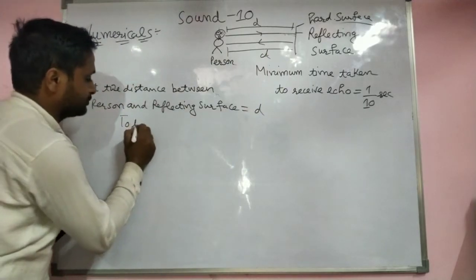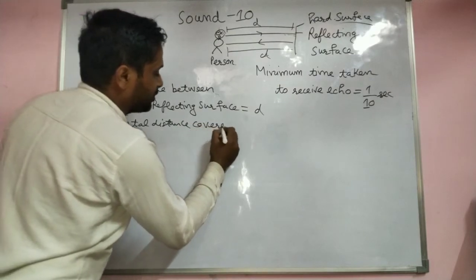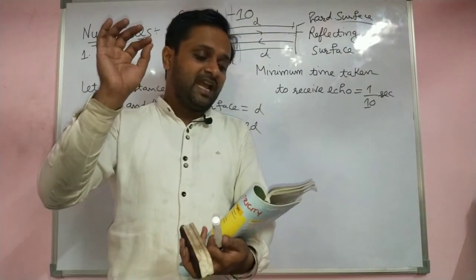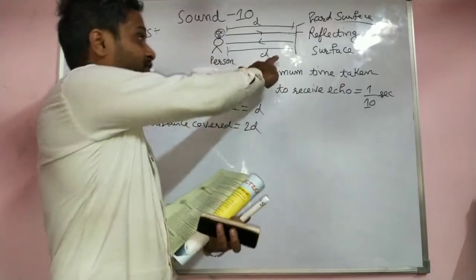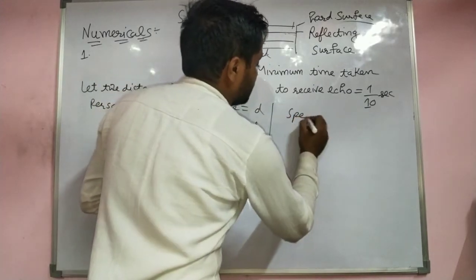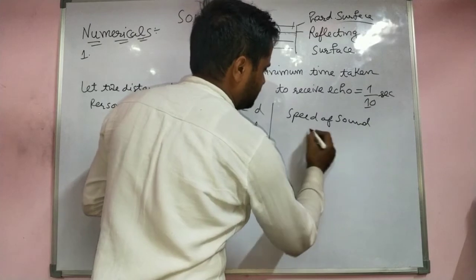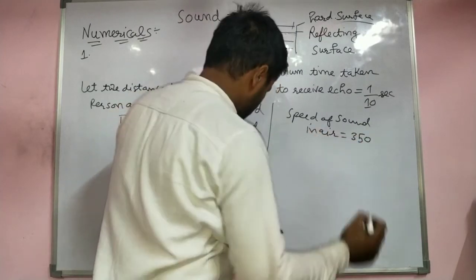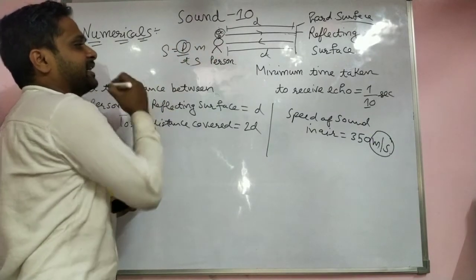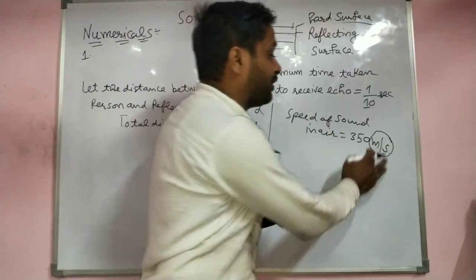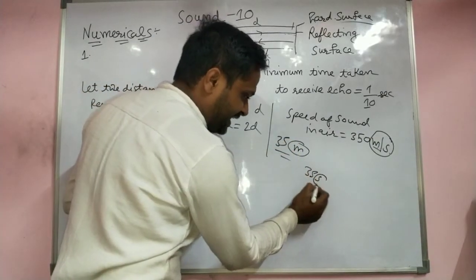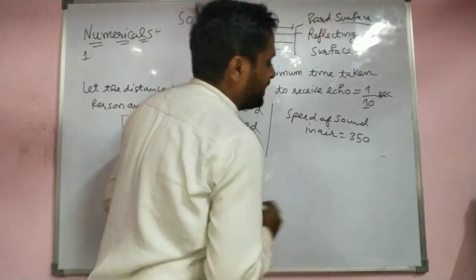The sound goes from the person to the surface — distance D — and comes back again, also D. So the total distance covered to hear an echo is 2D. The speed of sound in air here is given as 350 meters per second. The unit tells you what a value represents: meters per second means speed, meters alone means distance, and seconds alone means time.